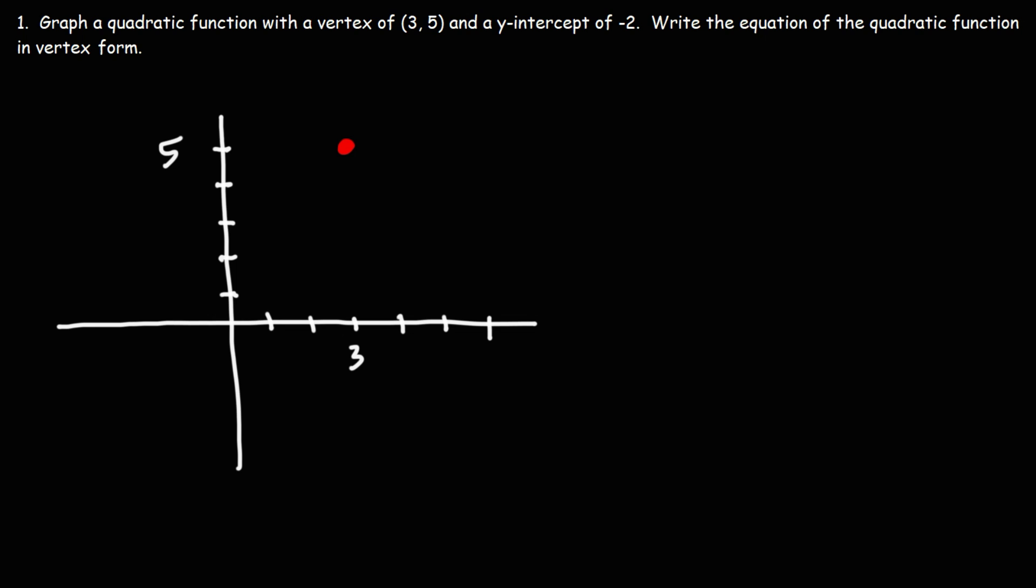And we also have a y-intercept of negative 2. So what that means is that x is 0, and y is negative 2. So that should be somewhere here.